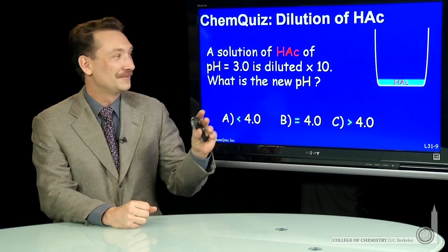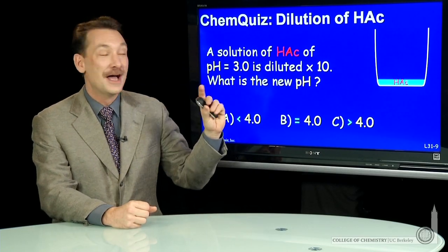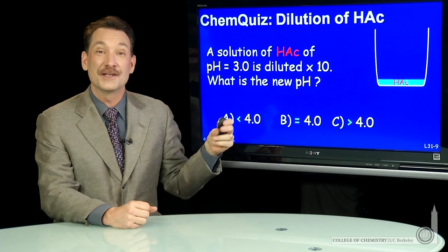Let's take a weak acid, acetic acid, originally at pH 3, dilute it by a factor of 10 and ask, what is the new pH?